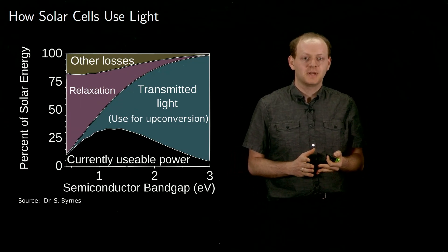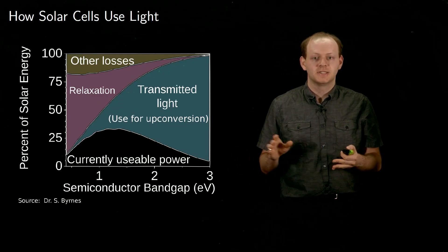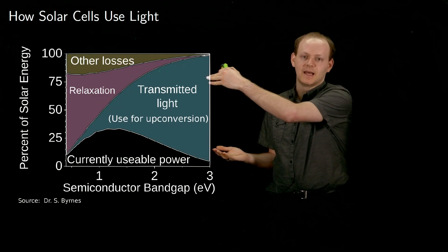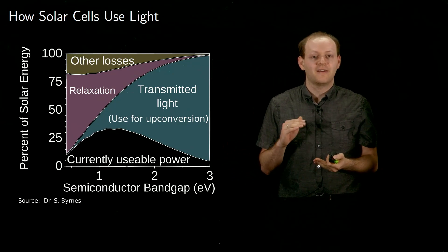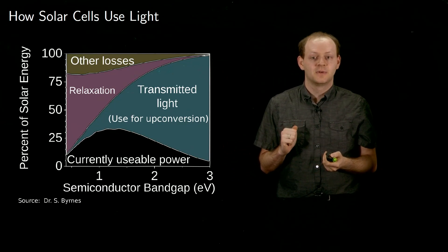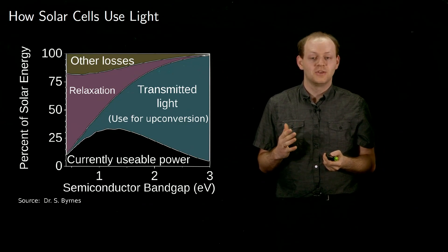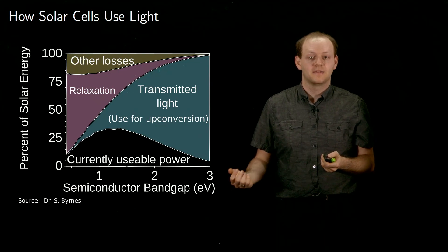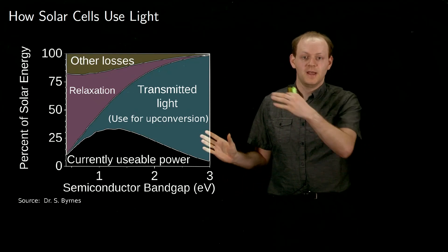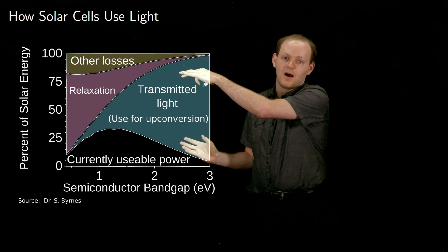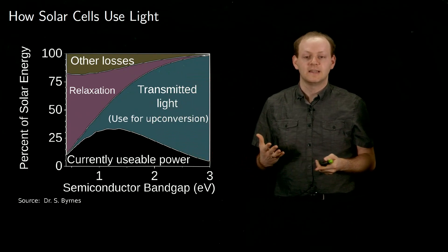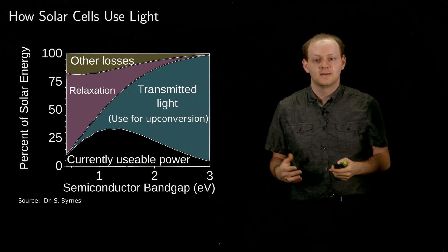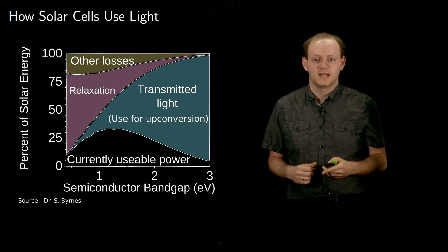We want to use upconversion to take the transmitted light and convert it into higher energy light, which can be used by the solar cell. This will get rid of this huge area of losses, increasing the efficiency of solar cells.